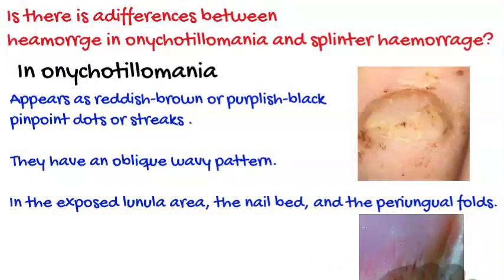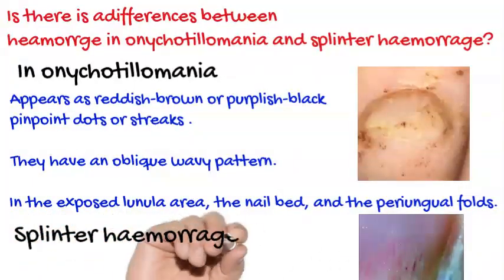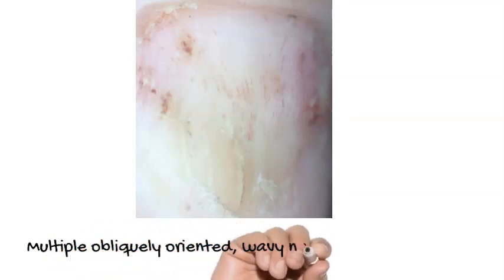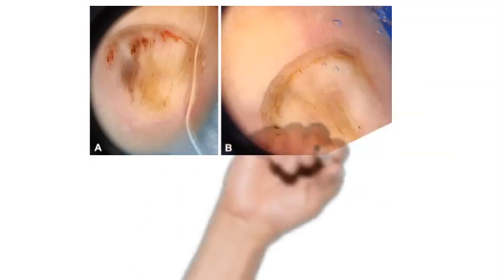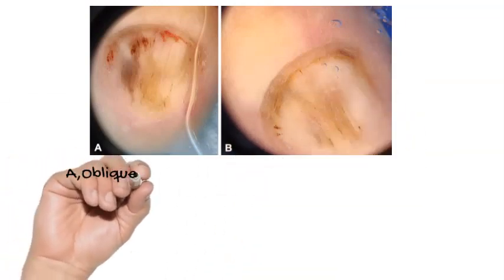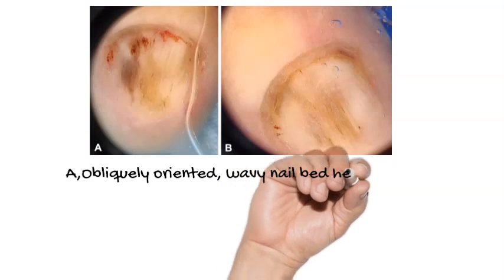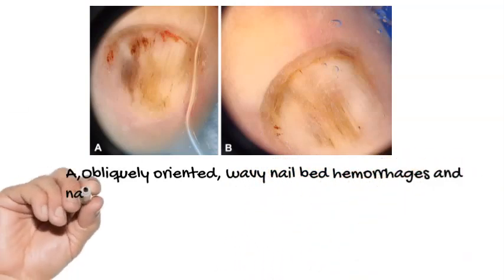While in splinter hemorrhage, it is longitudinally oriented. In onychotillomania, hemorrhages are multiple, obliquely oriented wavy nail bed hemorrhages. Note the wavy lines — this nail shows obliquely oriented wavy nail bed hemorrhages and nail bed pigmentation associated with wavy lines.